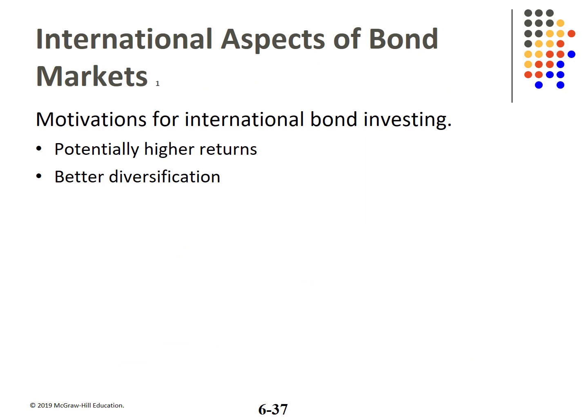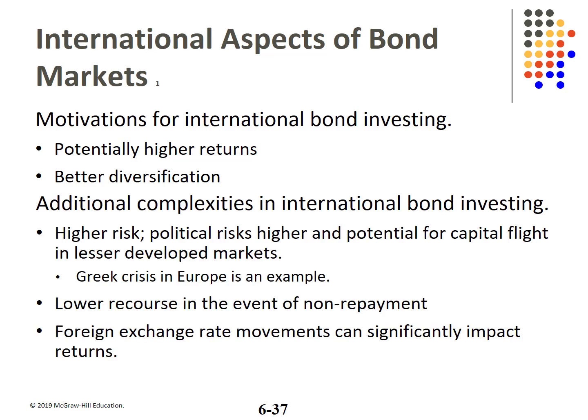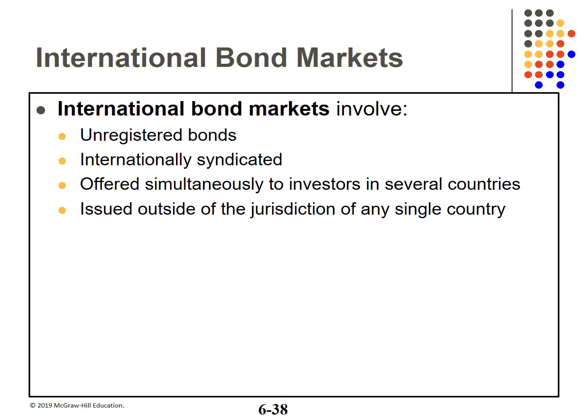Individuals and businesses could choose foreign bonds for both the diversification benefit and the potential for higher returns. However, anytime you trade in a foreign market, there are additional complications: higher political risk — remember the crisis in Greece — and a lender to a sovereign nation has very little recourse in the event of non-payment, except the threat of reputational loss and reduced access to future capital. Foreign exchange rates can move against you, wiping out any gains. Unlike the U.S., international bonds can be unregistered bearer bonds. Many are internationally syndicated, offered in several countries, issued outside the jurisdiction of any country.